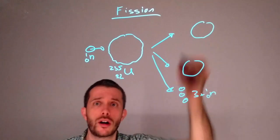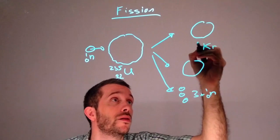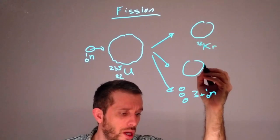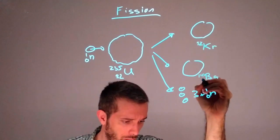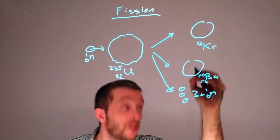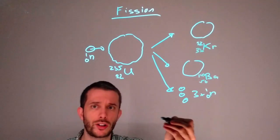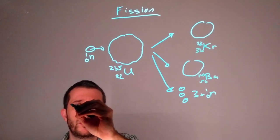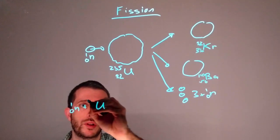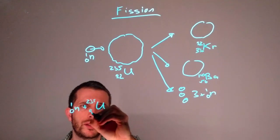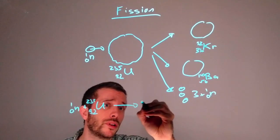So the chunks could be krypton-92 and barium-141. If I was to write down the nuclear reaction for this, it would be that one neutron plus uranium-235-92 will become krypton-92